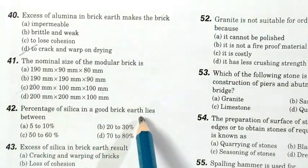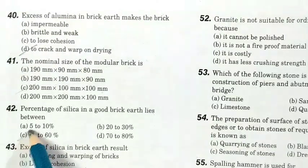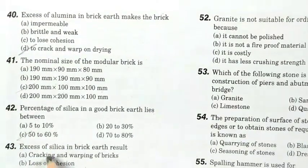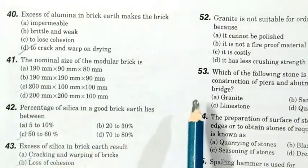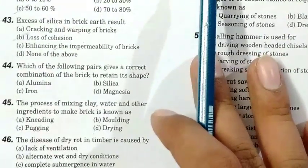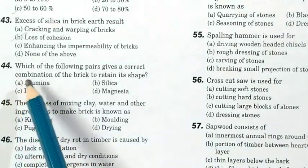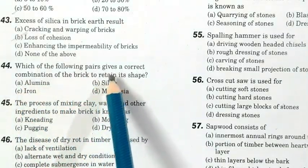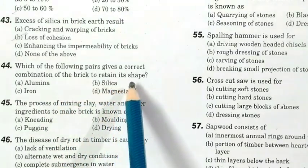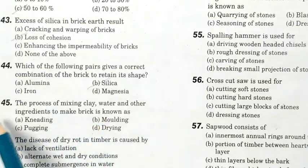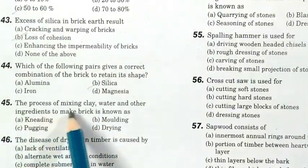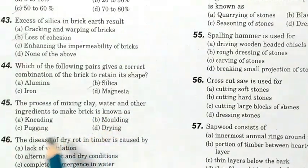Percentage of silica in good brick earth lies between 50 to 60 percent. Excess of silica in brick earth results in loss of cohesion. The correct combination for a brick to retain its shape is silica. The process of mixing clay, water, and other ingredients to make the brick is known as kneading.